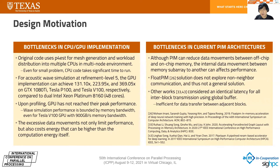The second motivation is the bottlenecks in current PIM architectures. We use PIM to reduce data movement between off-chip and on-chip memory, but internal data movement between memory subarrays can also affect performance. In previous work, such as FloodPIM, the solution does not explore non-neighbor communication, so we need a more general solution. Other works only consider identical latency for all interblock transmission using a global buffer, which is inefficient for data transfer between nearby adjacent blocks.